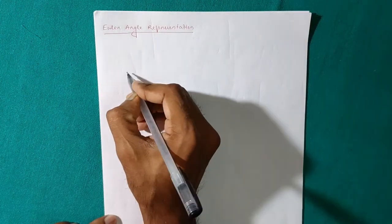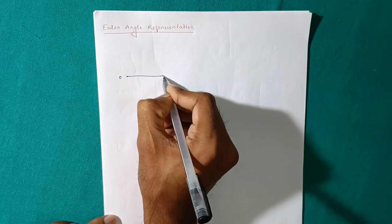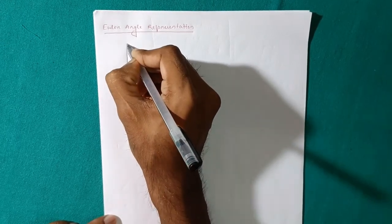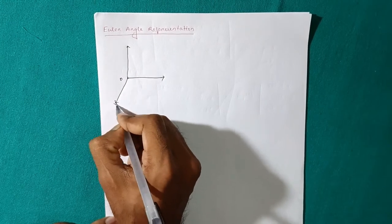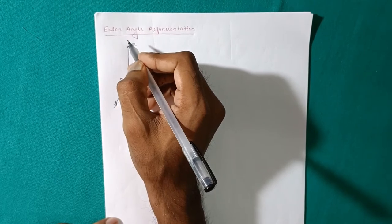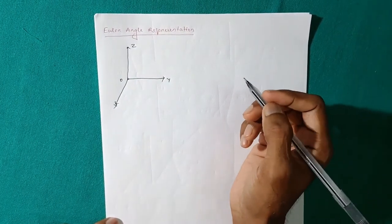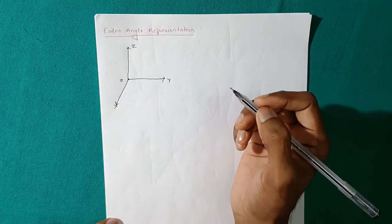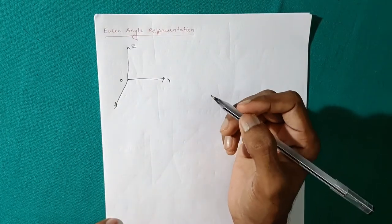So let's first take a point as O. Here are the three axes: x, y, and z.